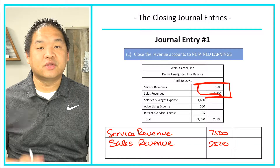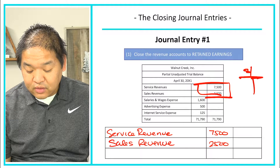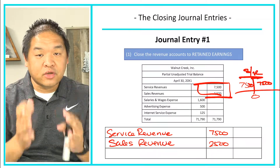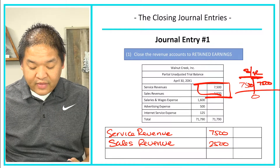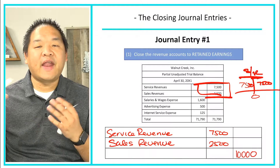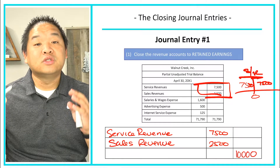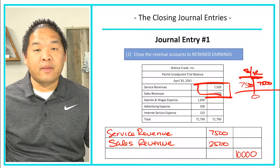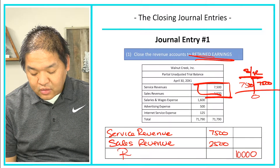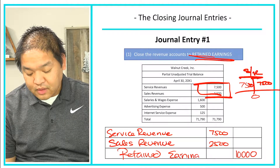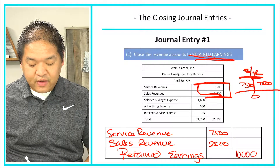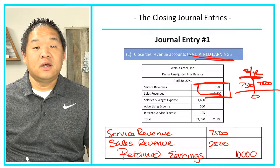That takes care of zeroing them out. For example, service revenue would have a $7,500 credit, and because of this entry we debit $7,500, which gives us zero. Now we are missing a credit. Since $7,500 plus $2,500 equals $10,000, all debits must equal all credits, so we need a credit of $10,000. We close it to retained earnings, so we credit retained earnings for $10,000. Debit service revenue, debit sales revenue, credit retained earnings.